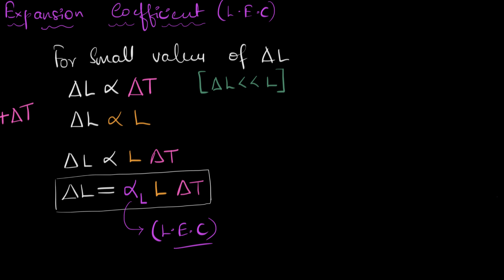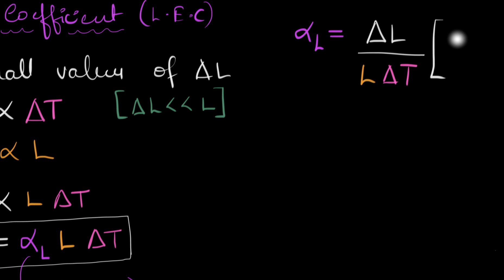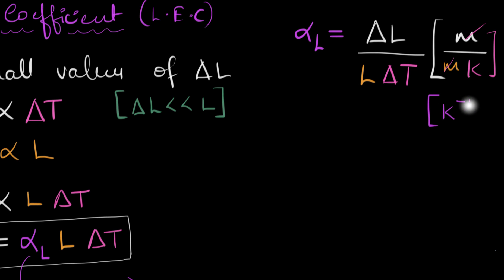Let's figure out the units of alpha L. We divide both sides by L delta T to isolate alpha L, giving alpha L equals delta L divided by L times delta T. Delta L has units of meters, L is also meters, and delta T has units of Kelvin. The meters cancel, leaving us with 1 over Kelvin, or Kelvin inverse. That's the unit of alpha L, the linear expansion coefficient.